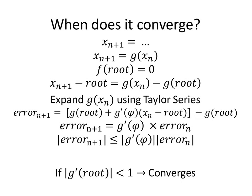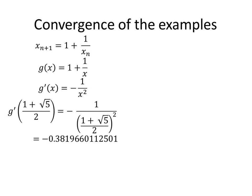So now let's examine our two equations that we had earlier. With our first equation, we'll go ahead and call that g(x). If we take the derivative of g(x), we can get g'. Plug in the root for that value, and we get -0.381, etc., which turns out to be less than 1 in absolute value. Therefore, this one converges.